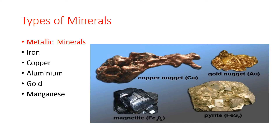Metallic minerals are those from which we can extract metals such as iron, copper, gold, silver and aluminium. These metals are used to make vessels, stationary items, nails, bodies of cars and aeroplanes. Let us see them one by one.